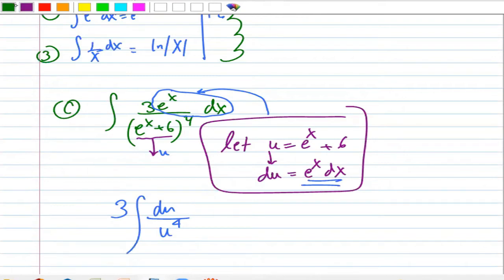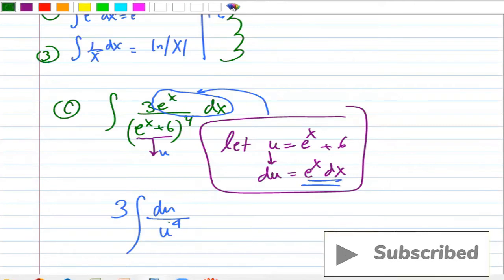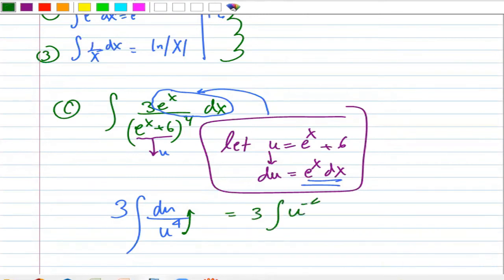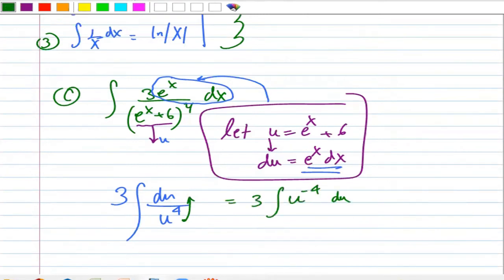Now that is something that you should be able to integrate, but the way it is, not integrable unless you push this u up. So that becomes three integral u power minus four, because you want to apply rule number one. You divide, to say you add a one.